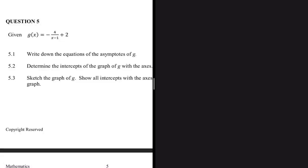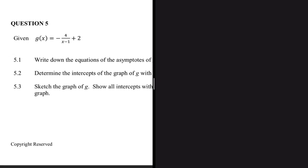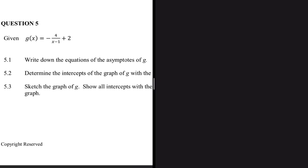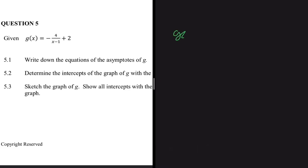We have a hyperbola g(x) given as minus 4 divided by x minus 1, plus 2. The first question asks us to write down the equations of the asymptotes of g. So g(x) equals minus 4 divided by x minus 1, plus 2.